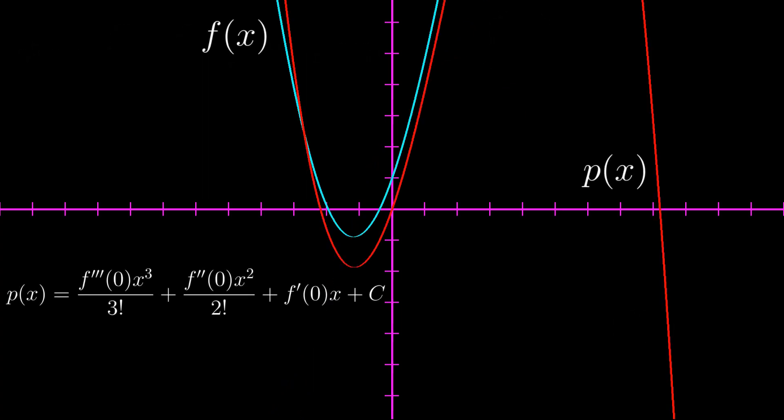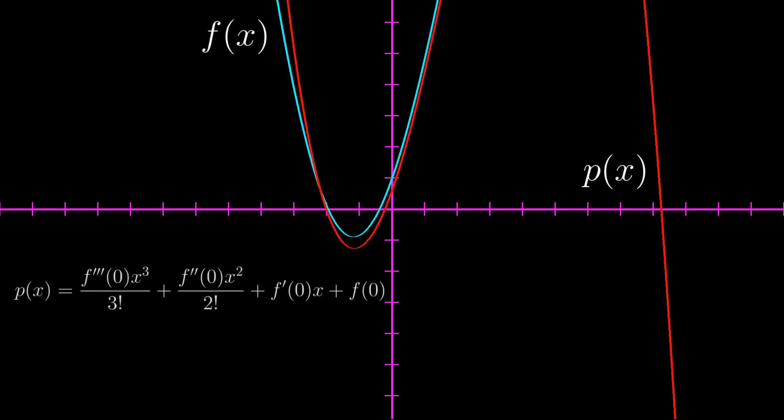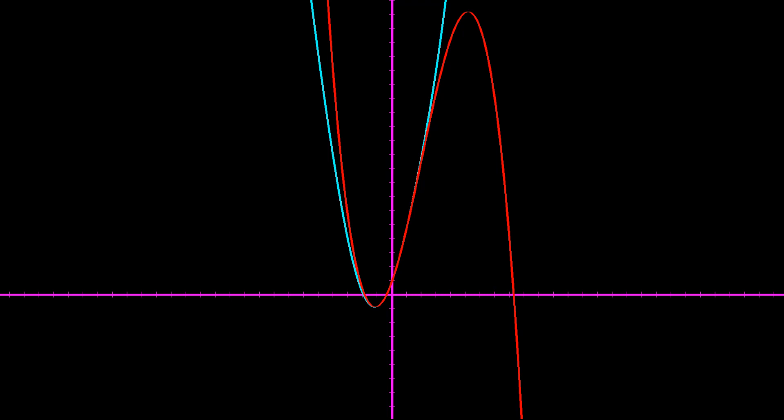Repeating all of this one last time, we get p of x equal to the third derivative of f at 0 times x cubed divided by 3 factorial, plus the second derivative of f at 0 times x squared divided by 2 factorial, plus the first derivative of f at 0 times x plus c. Setting c to f of 0, we are finished with the construction of our approximating function p of x — and that is a pretty good approximation.